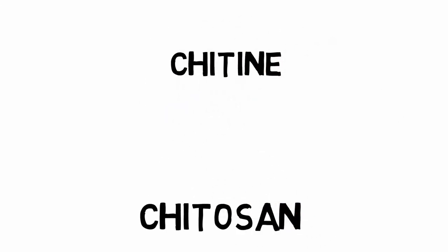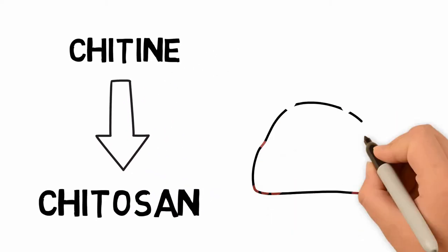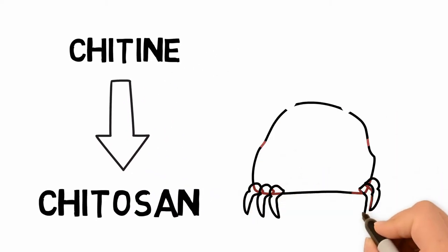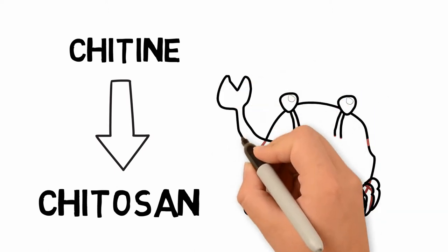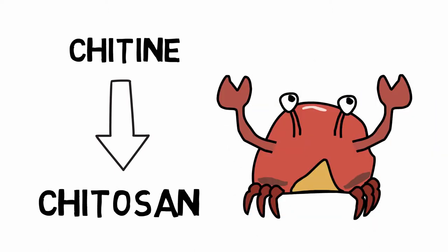To this end, the team developed a chitosan-based hydrogel. Chitosan is a natural polysaccharide derived from the chitin found in the shell of crustaceans that can be injected directly into the udder and promote the recruitment of immune cells and accelerate involution.